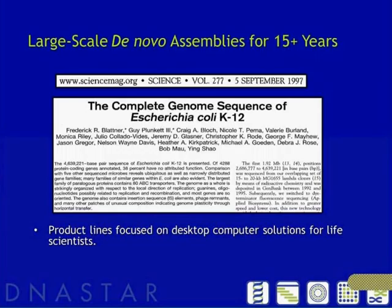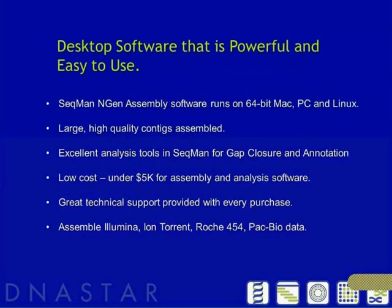If you're a newbie just starting your first project, we can help you get started and troubleshoot. Our software we're going to talk about today is our SeqMan Engine assembly software, and then we'll also look at SeqMan, which we use to view the projects. The Engine assembler runs on 64-bit Mac, PC, and Linux computers and produces very high-quality contigs. In a de novo assembly, quality means everything. Our software is desktop software for under $5,000, with support included with all purchases.